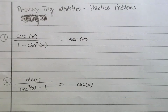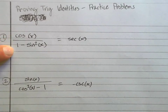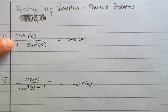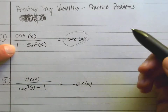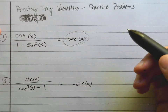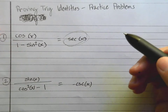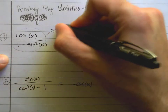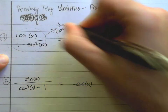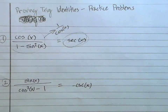Problem one is cosine over one minus sine squared. There's nothing I can rewrite right away in terms of sine or cosine, except I know that the right side rewrites to one over cosine. So the left side has to become one over cosine — I've got to figure out how to make that happen.